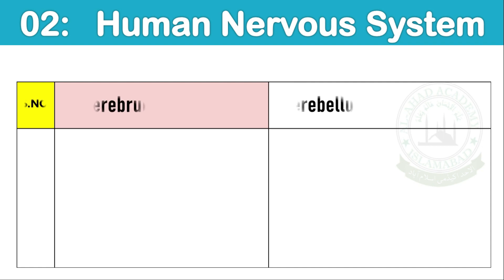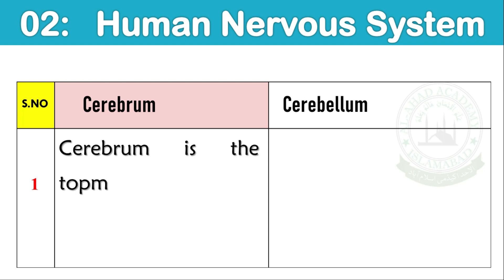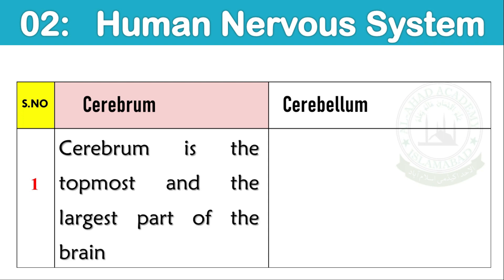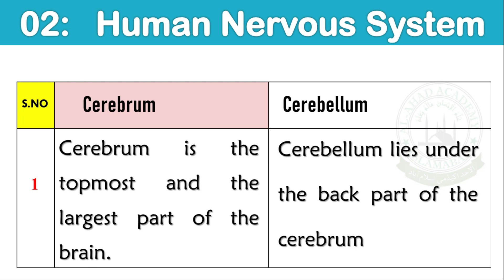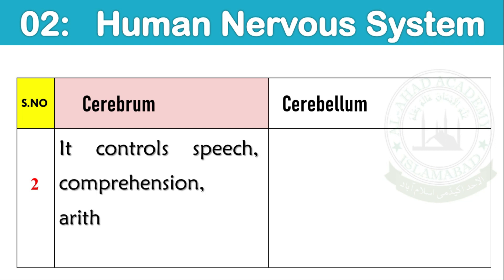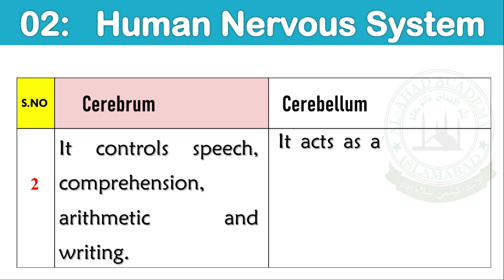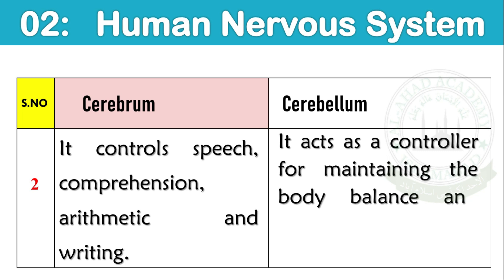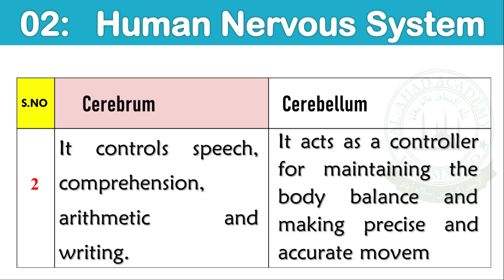Cerebrum and Cerebellum: Cerebrum is the topmost and largest part of the brain. It controls speech comprehension, arithmetic and writing. Cerebellum lies under the back part of the cerebrum. It acts as a controller for maintaining body balance and making precise and accurate movements.